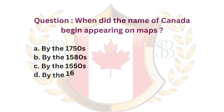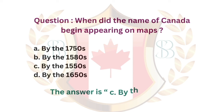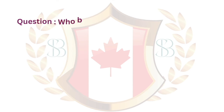Question. When did the name of Canada begin appearing on maps? a. By the 1750s. b. By the 1580s. c. By the 1550s. d. By the 1650s. The answer is c. By the 1550s.